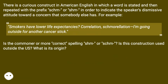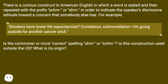There is a curious construct in American English in which a word is stated and then repeated with the prefix SHM- or SCHM-, in order to indicate the speaker's dismissive attitude toward a concern that somebody else has. For example: 'Smokers have lower life expectancies?' — 'Correlation, shmorelation, I'm going outside for another cancer stick.'